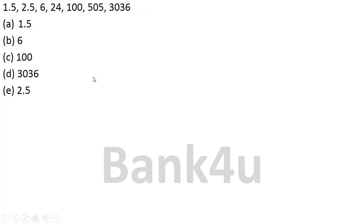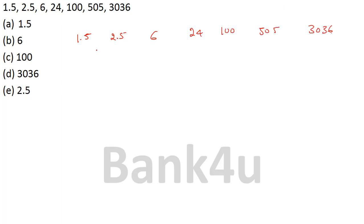Let's go to the second question: 1.5, 2.5, 6, 24, 100, 405, 3036. If you look at the values, they are increasing very drastically, so this is a series of multiplication. Let me work through this. Looking at 405 and 3036: if you take differences, it may not work, so I am going to multiply, coming from the last.